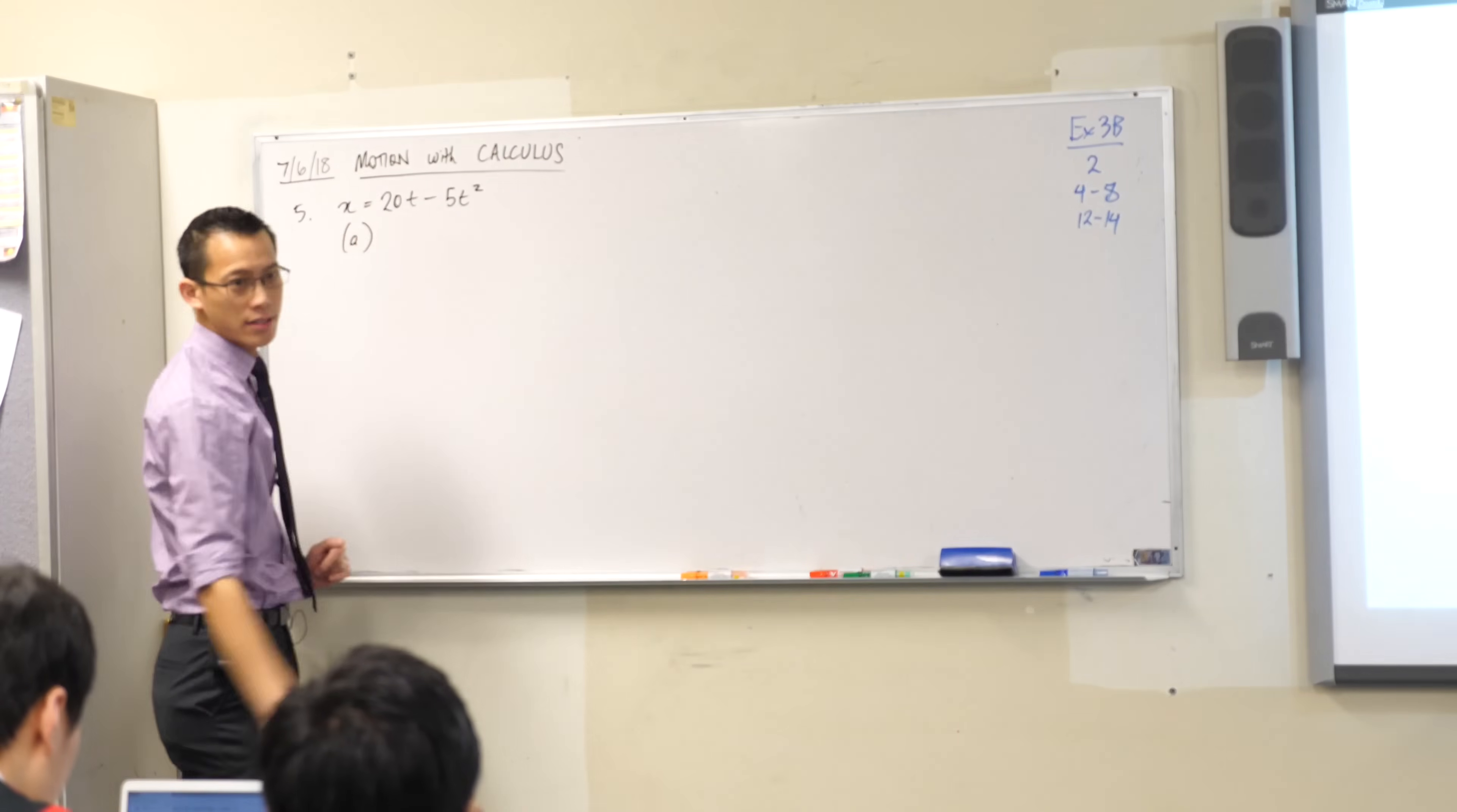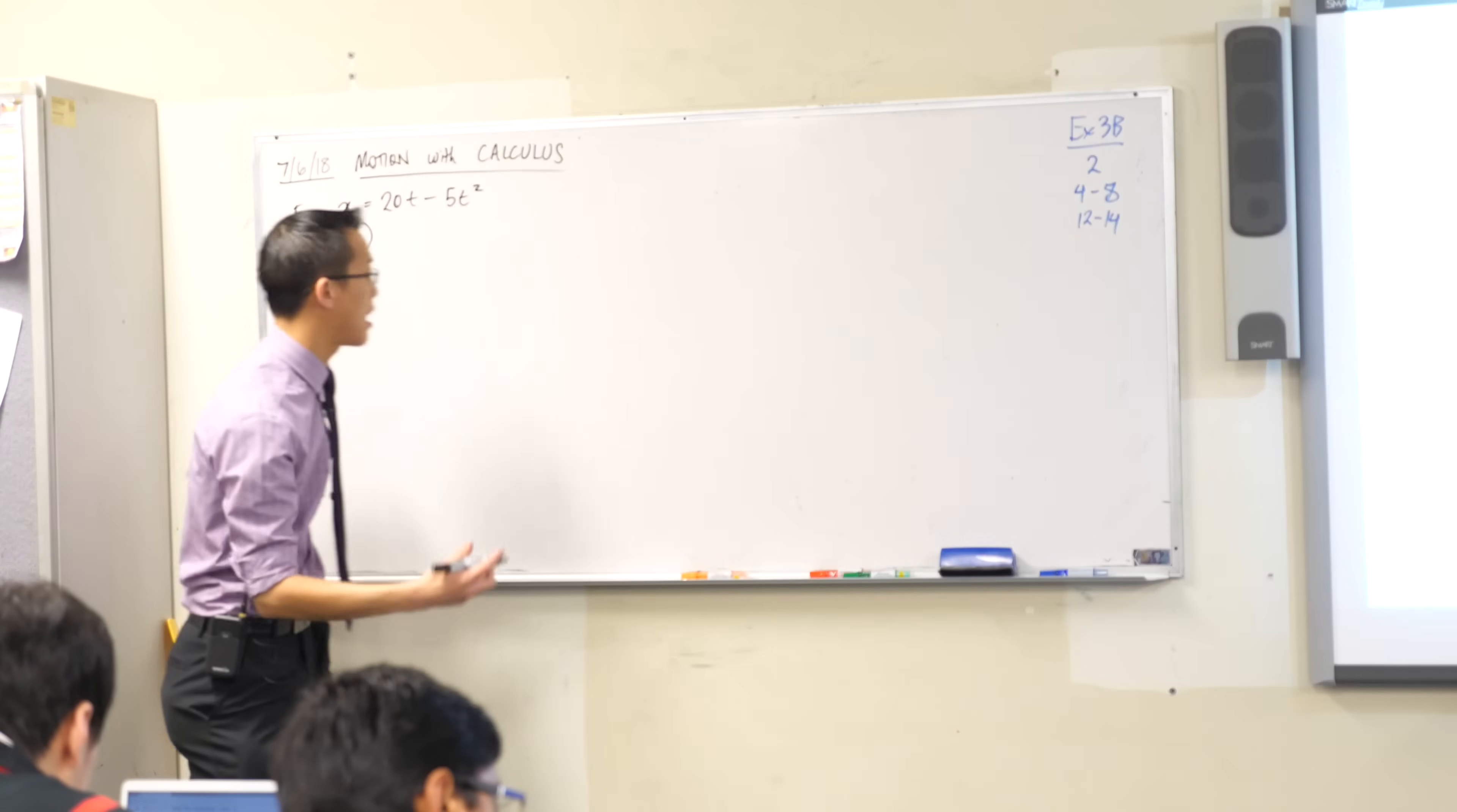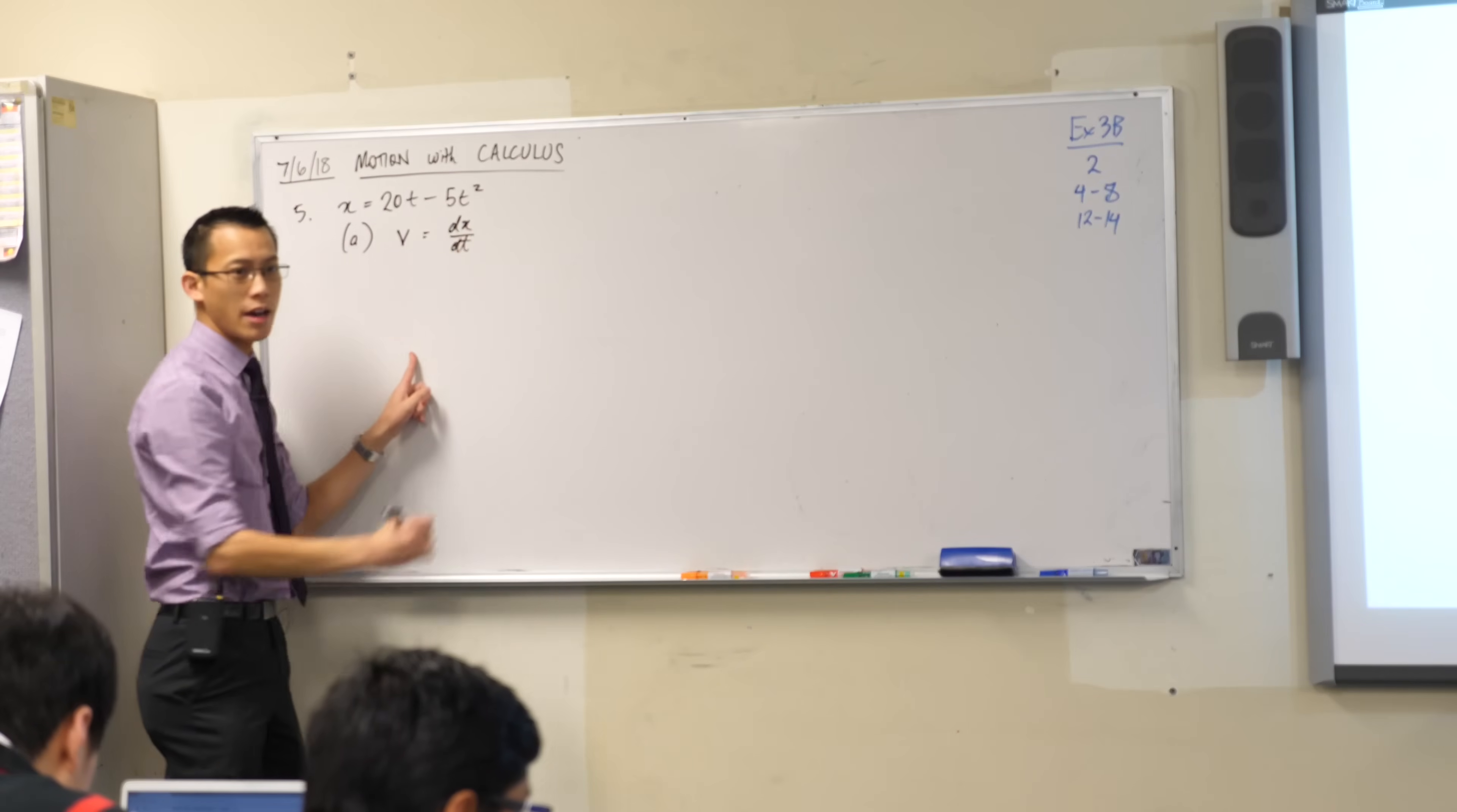They ask us to find a bunch of things as functions of time. So in part A, what are they asking for? Have a look. What's v? X dot. So this is x dot. This is the first derivative of displacement with respect to time. So I'm going to write v because they've asked me to write it down and I'm going to say that is the derivative of displacement with respect to time.